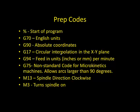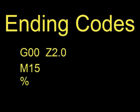To end a part program properly, please pull the end mill above the part, stop the spindle, and then tell the controller that the part program is finished. The three codes below will do that. G00 Z2.0 will lift the end mill above the part. M15 stops the spindle from rotating. And the percent sign indicates to the controller that the part program is over.